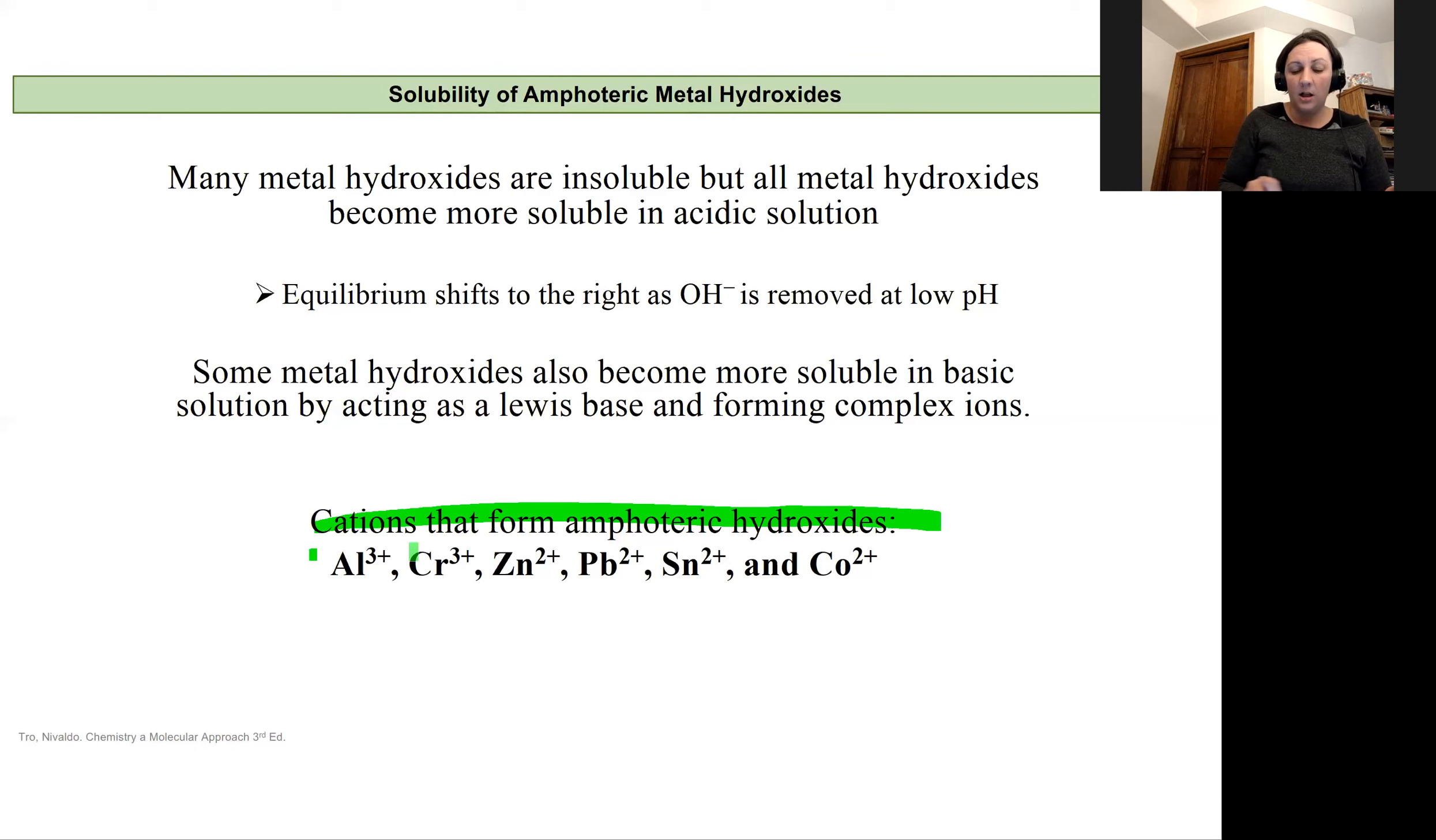Some of the cations that are going to form these amphoteric hydroxides, metal hydroxides, are aluminum, chromium, zinc, lead, tin, and cobalt.